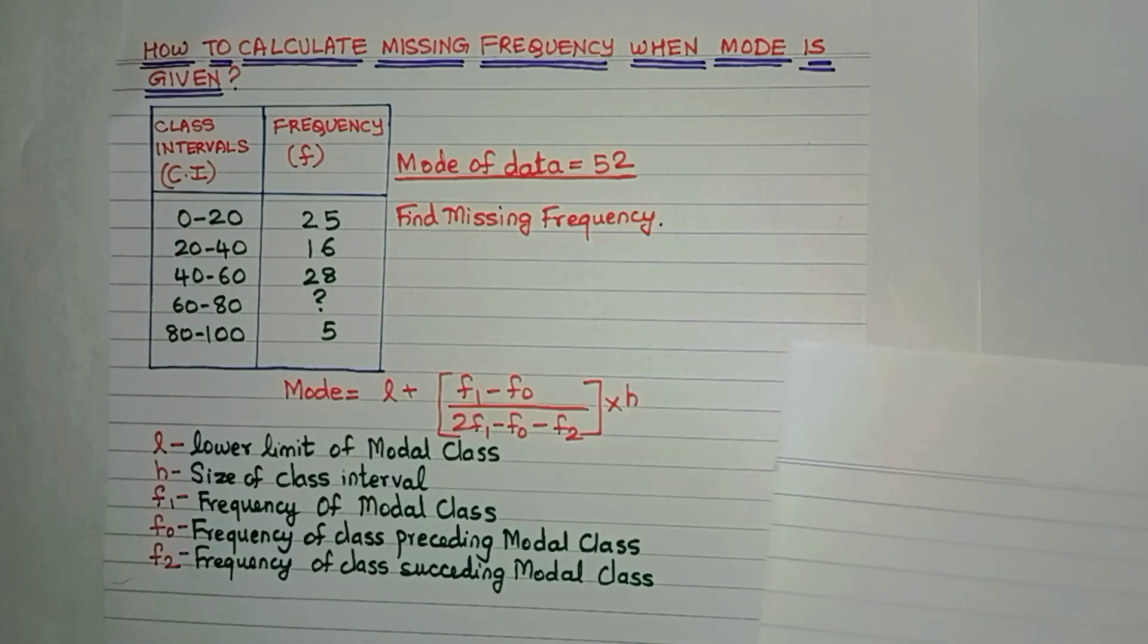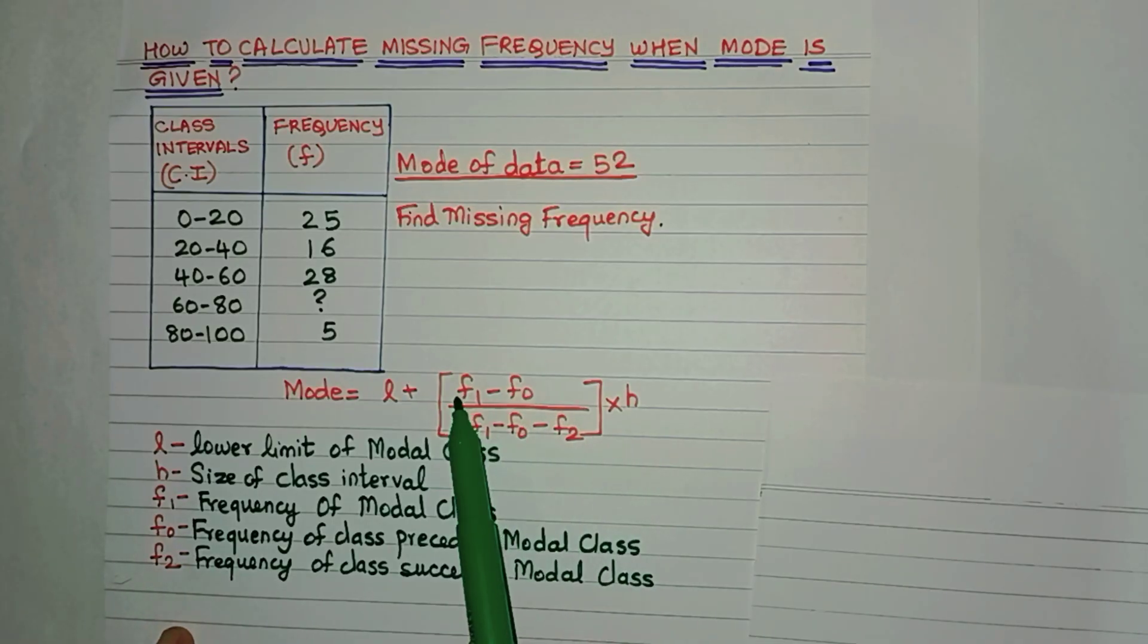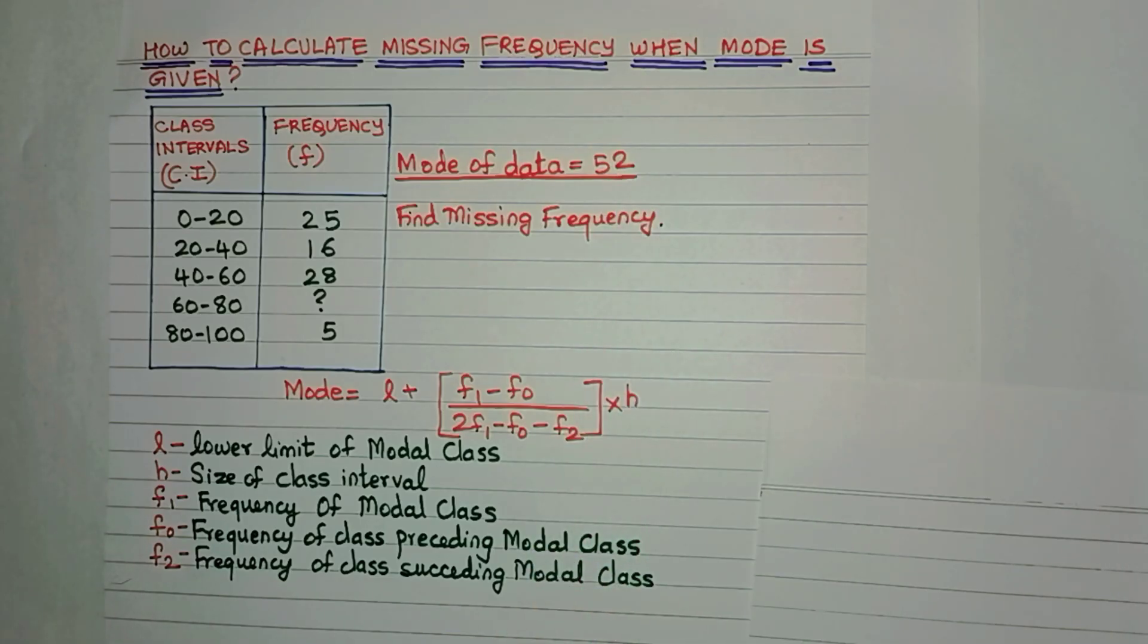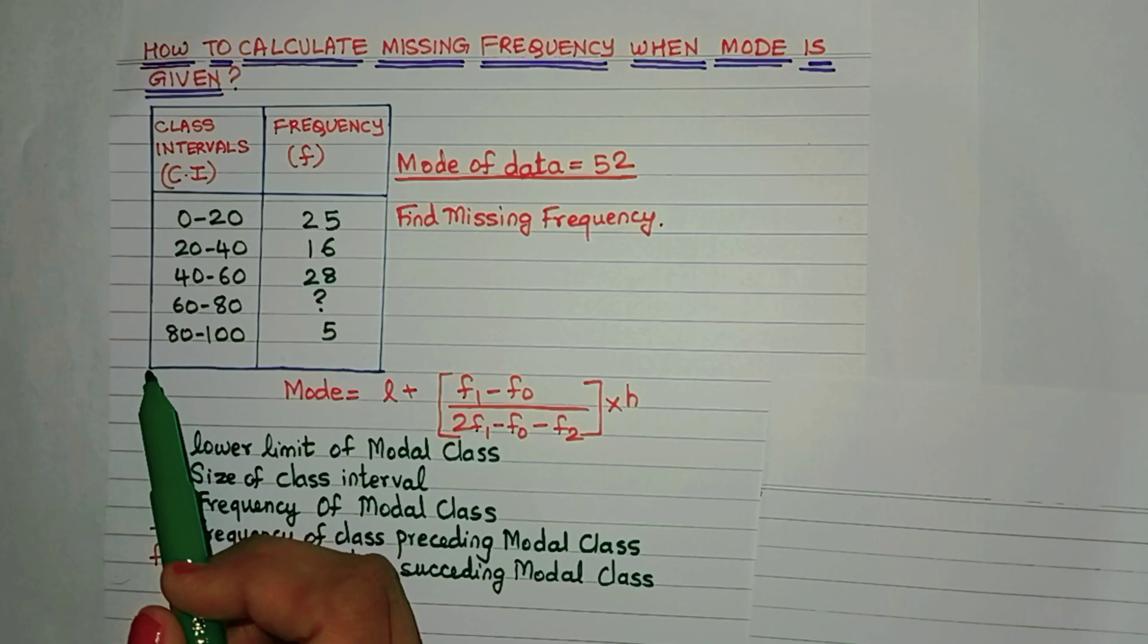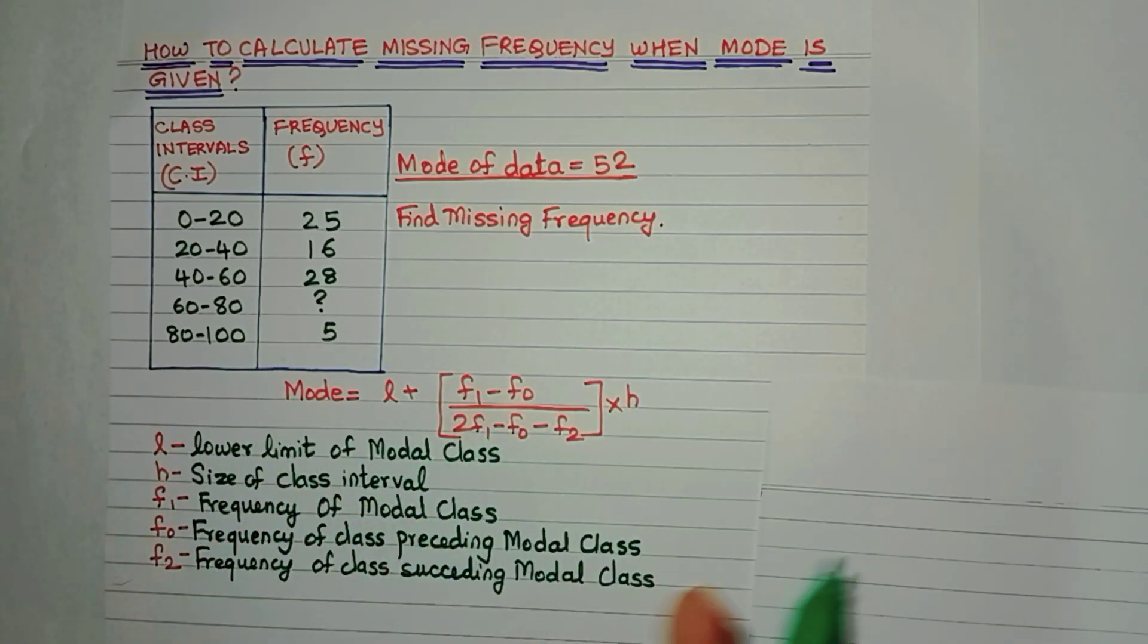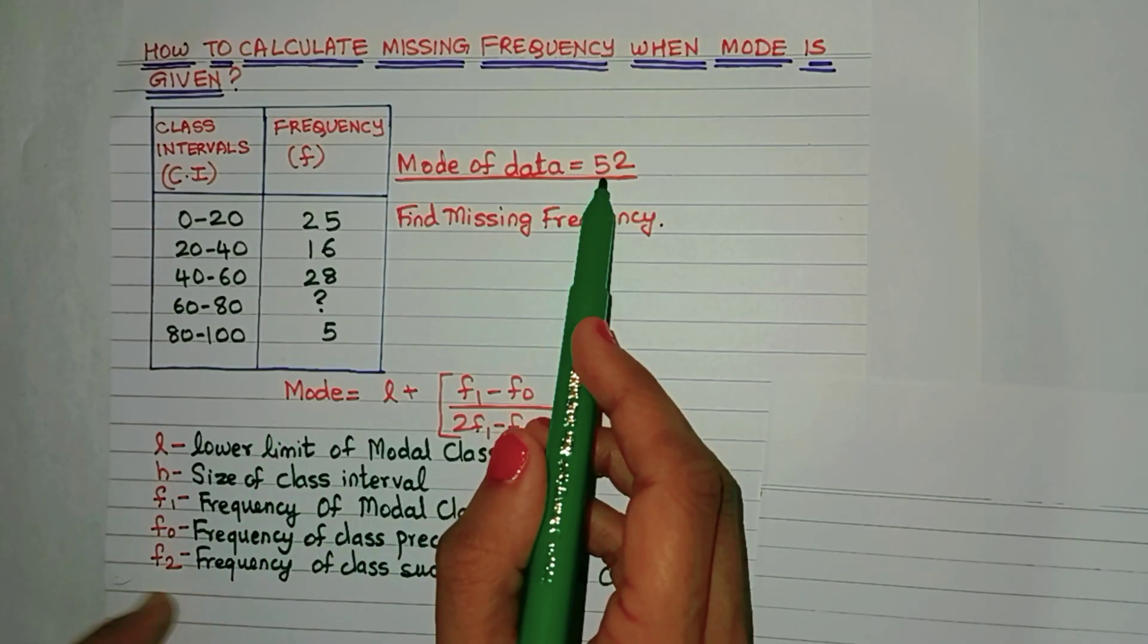Now we all know that the mode formula is this, but before we can use this formula, we need to find out these values. The mode is given as 52. Now what is mode? Yes, mode is that data which is present the maximum number of times. So 52 in this data is present the maximum number of times.